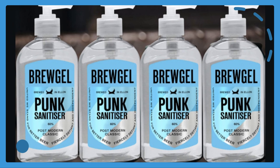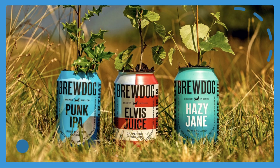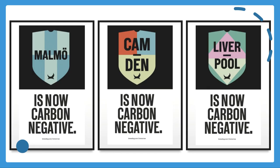They started producing punk sanitizers, with the profits going to help NHS charities. On their environmental commitment, the BrewDog forest is a great example. They bought the forest, they're planting trees, and their aim is to become carbon negative through what's called double offsetting — doubling the offset of the entire carbon footprint of the business through planting new trees.